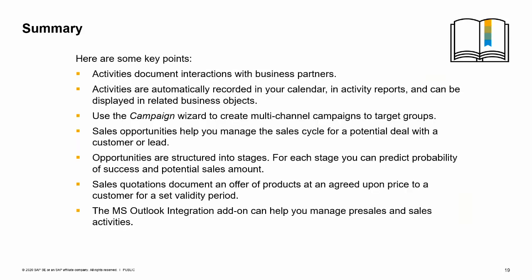In summary: Activities document interactions with business partners such as phone calls, meetings, tasks, and other contacts — you can set up a one-time or recurring activity, and they are automatically recorded in your calendar and activity reports. You can use the campaign wizard to create multi-channel campaigns for target groups. Sales opportunities help you manage the sales cycle for a potential deal, structured into stages where you can predict probability of success and potential sales amount. Sales quotations document an offer of products at an agreed-upon price to a customer for a set validity period. The MS Outlook integration add-on can help you manage pre-sales and sales activities. You have completed the topic for customer relationship management. Thank you for your time.